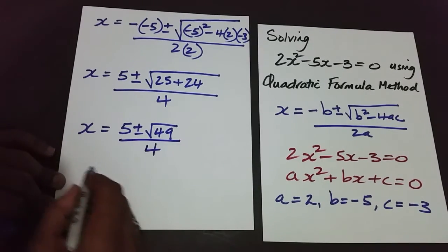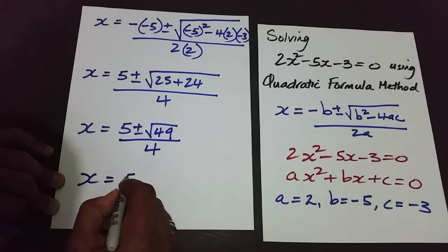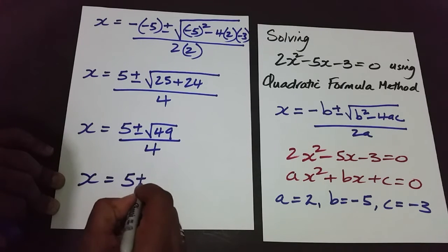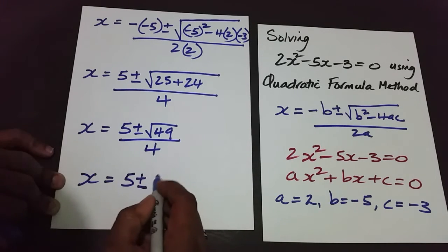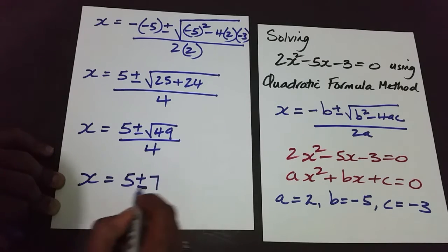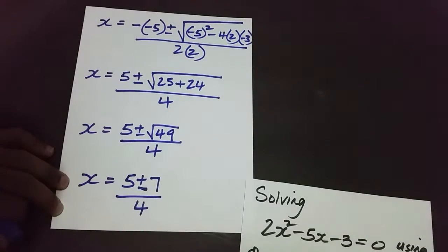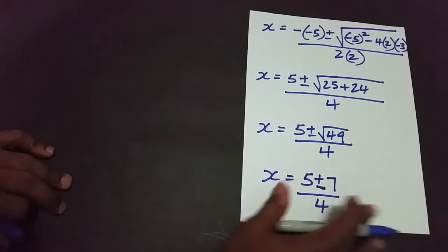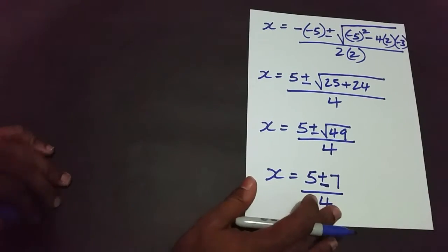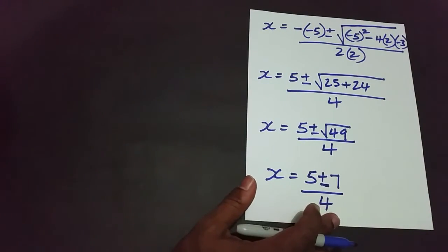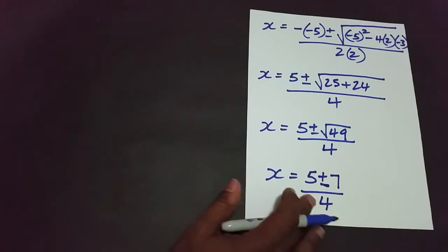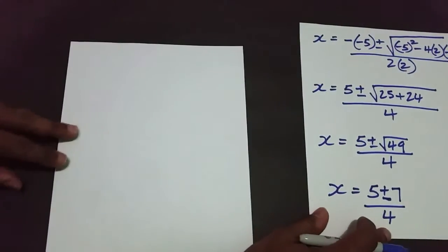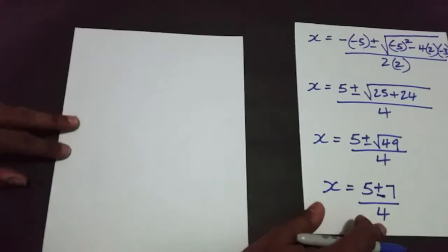x is equal to 5 plus or minus 7, all over 4. And I'm just going to push this over here to continue solving. We're now going to break off to get our two answers.